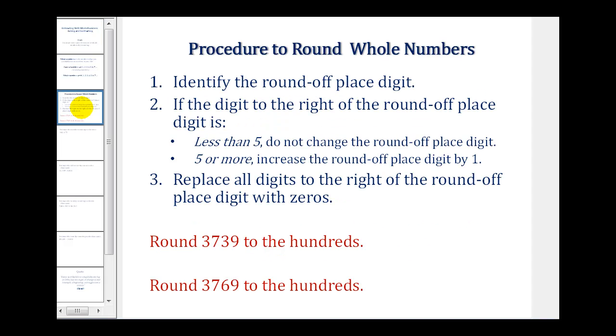The first thing we want to do is identify the round-off digit. Then if the digit to the right of the round-off digit is less than five, we do not change the round-off place digit. If it's five or more, we increase the round-off place digit by one. And the last step is to replace all digits to the right of the round-off place digit with zeros.